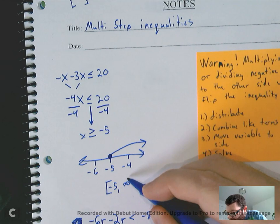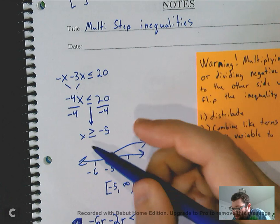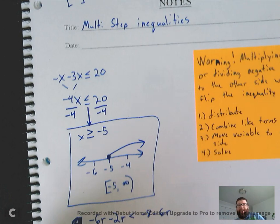If it had been an open circle, it would be a parenthesis. And then infinities will always have a parenthesis, because it can never equal infinity. And that's it. Those are your three answers for that problem. Not too bad, right?